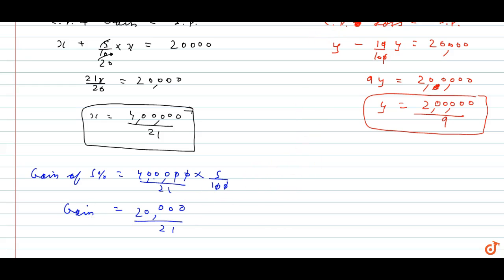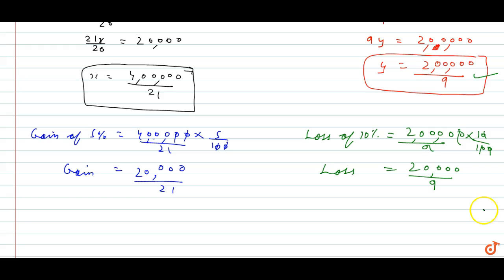Similarly, the loss was 10%. Loss of 10% will be 200,000 upon 9 into 10 upon 100, which is 20,000 upon 9. This is the loss.